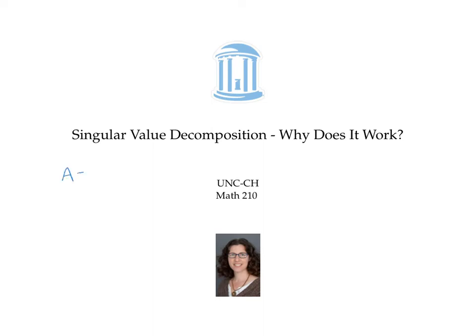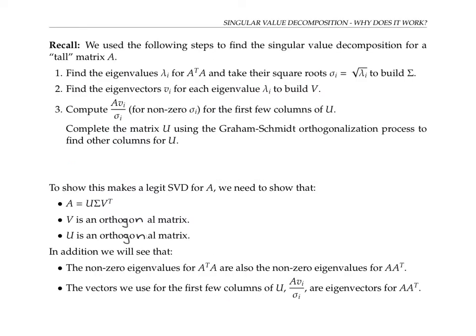In a previous video, we walked through an algorithm for finding the matrices U, sigma, and V used for a singular value decomposition. In this video, we'll go through some of the theory behind it to explain how we know that the U and V that we found are orthogonal matrices, and how we know that when we multiply these three matrices together, we actually get back A. Here are the steps we used to find the singular value decomposition for a tall matrix A — by tall, I just mean that the number of rows is greater than or equal to the number of columns.